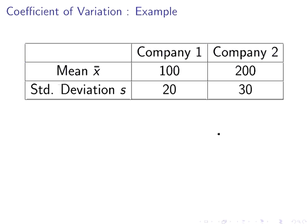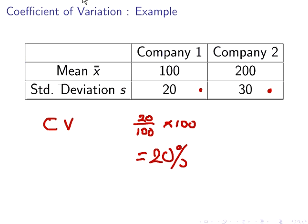Now, just looking at the first instance, we would think 30 is the bigger number, so Company 2 would presumably have the higher level of variance. But what we're going to do is compute the coefficient of variation for both. CV for Company 1 is 20 divided by 100, expressed as a percentage, so we get 20%.